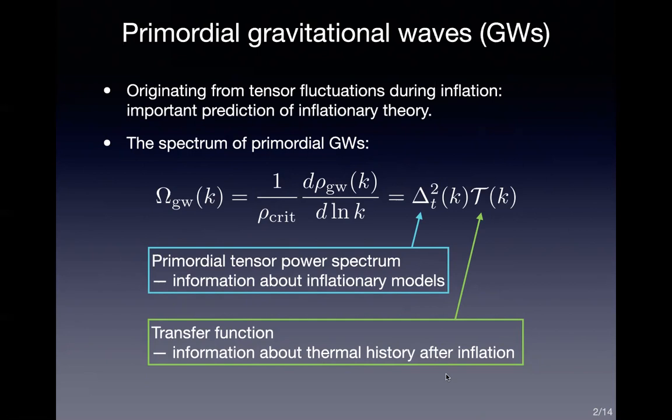Primordial gravitational waves originating from tensor fluctuations during inflation are an important prediction of inflation. The spectrum of primordial gravitational waves is described by the quantity omega_gw, which is the ratio of the energy density of gravitational waves in the logarithmic interval to the critical density of the universe. We can further decompose this quantity in terms of two factors that correspond to two important pieces of information obtained from observation.